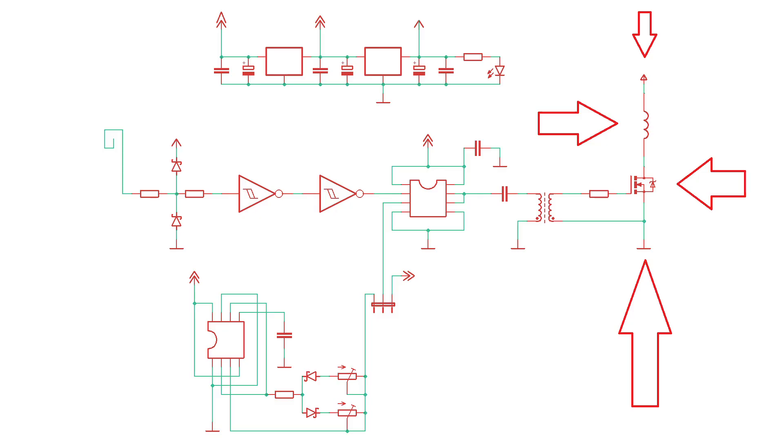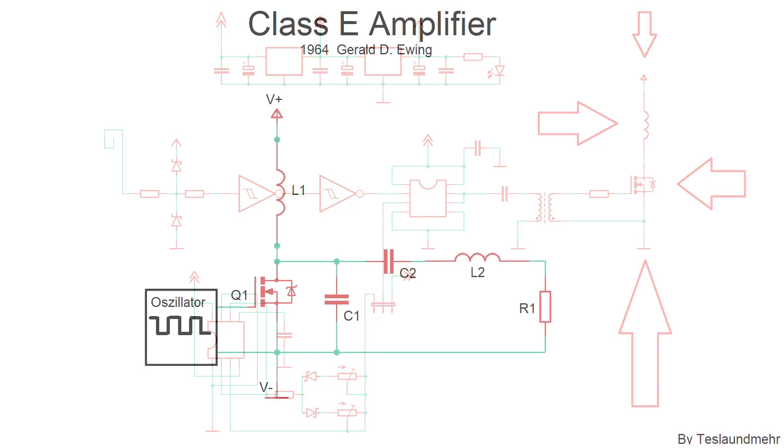Actually we just modify our power amplifier a little bit. And it basically looks like this. Q1 is our MOSFET, for example a RFP460. L1 is an inductor, its value is critical. C2 is kind of a coupling capacitor, its value is not critical.